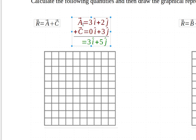So what you see was A was 3i hat plus 2j hat and C was 0i hat plus 3j hat. I like to write these vector additions like this because it's easier to see what's going on. When you do a vector addition you add the i components so 3 plus 0 equals 3 and then you add the j's 2 plus 3 equals 5.